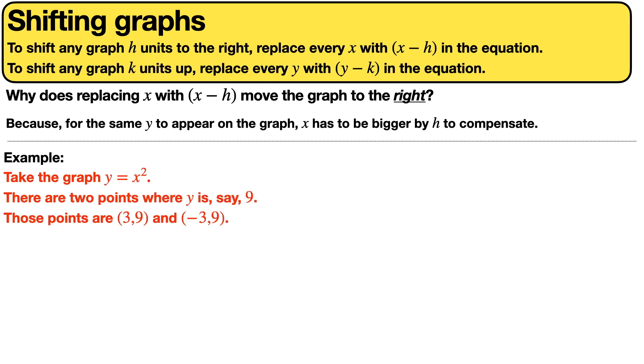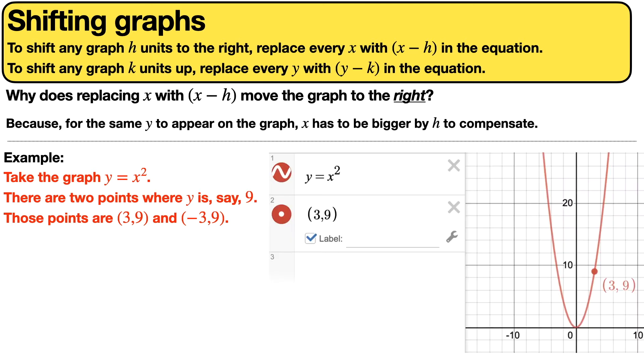Here's an example. Take the graph y = x², and there are two points where y is 9. Those points are (3,9) and (-3,9). I highlighted (3,9) on the graph.